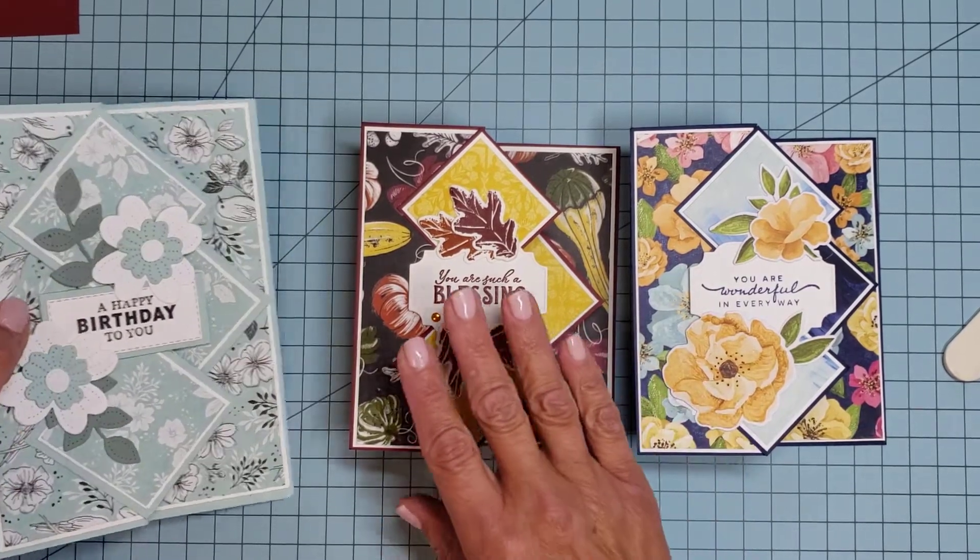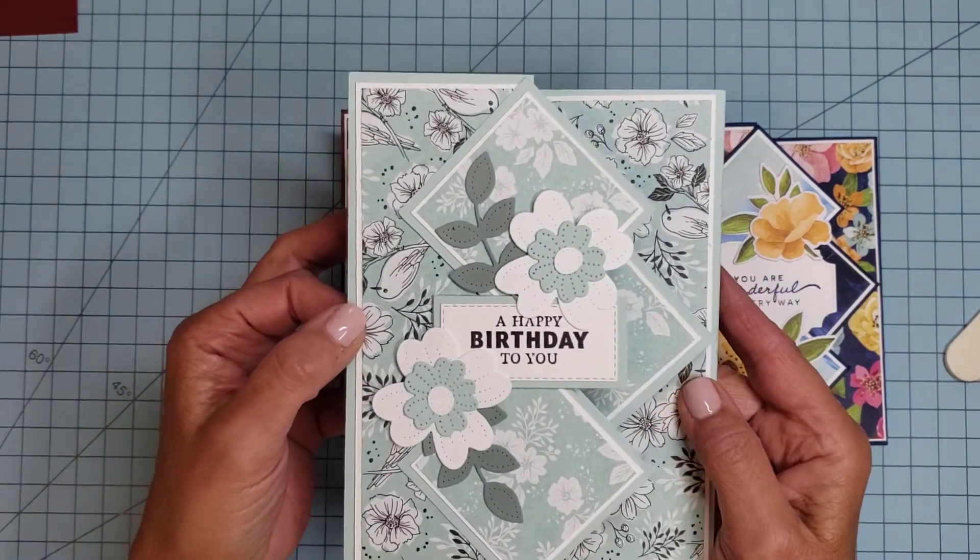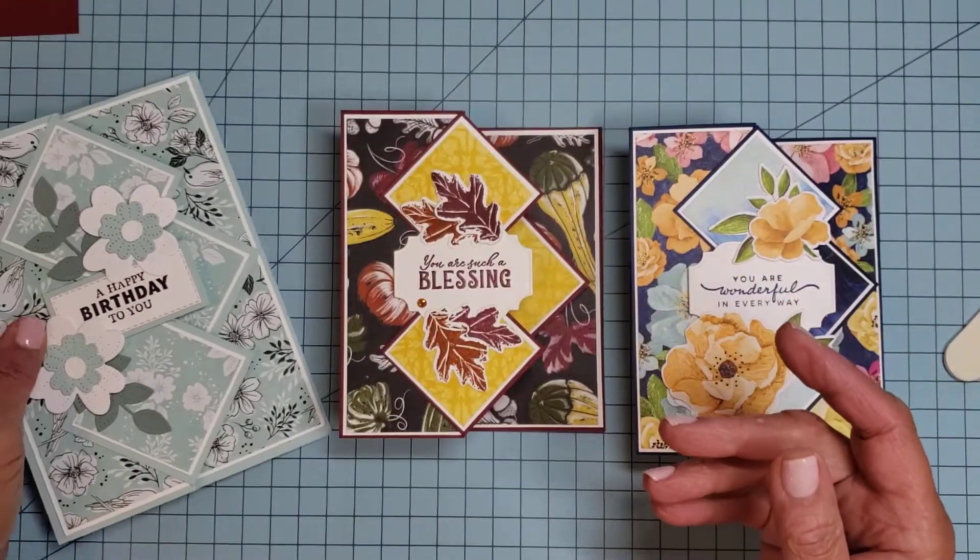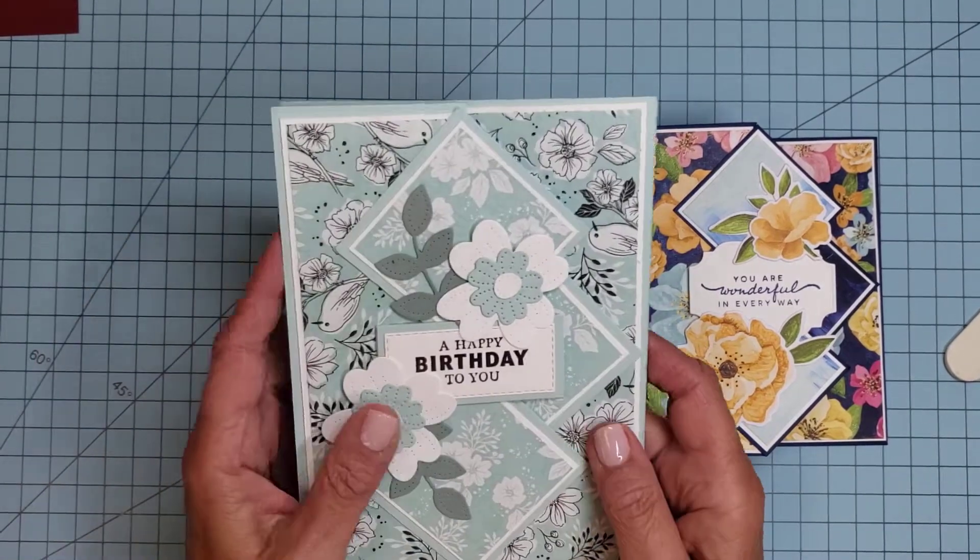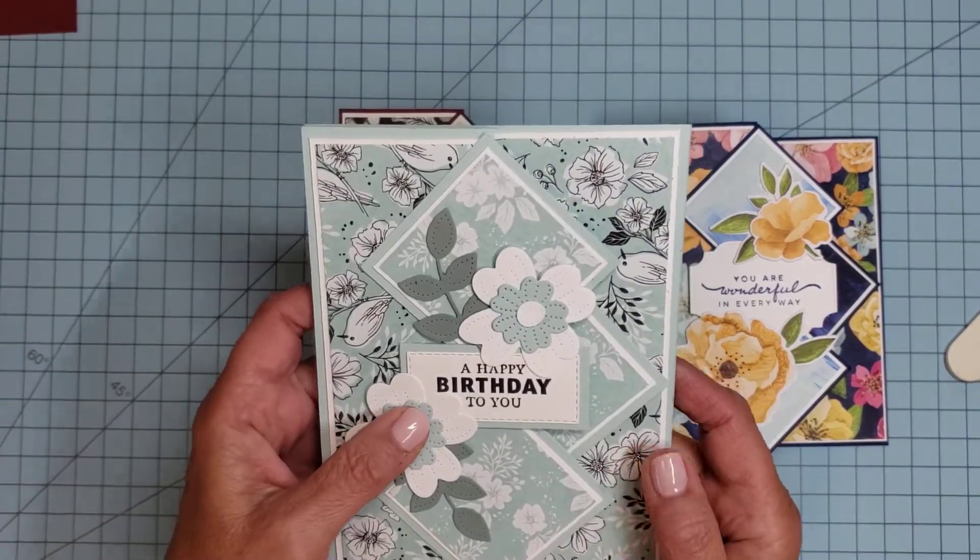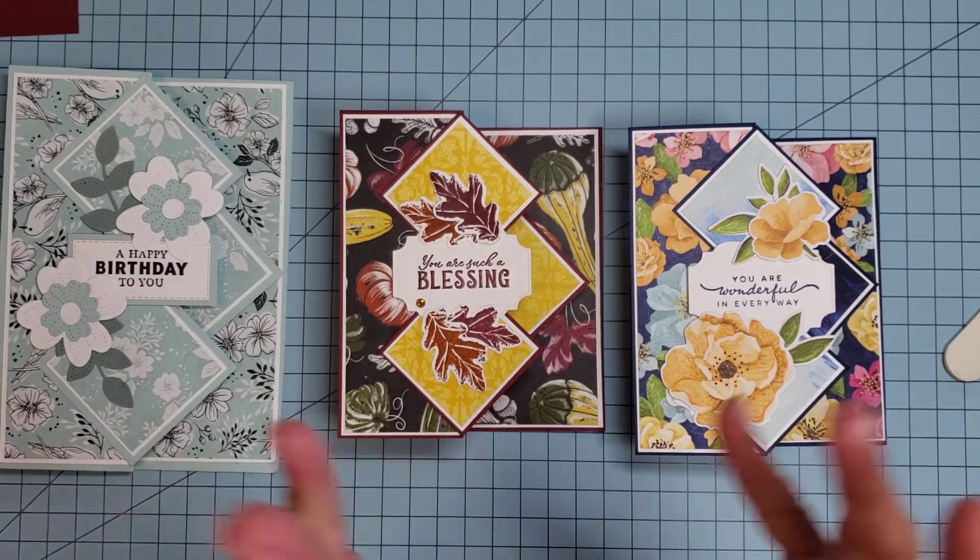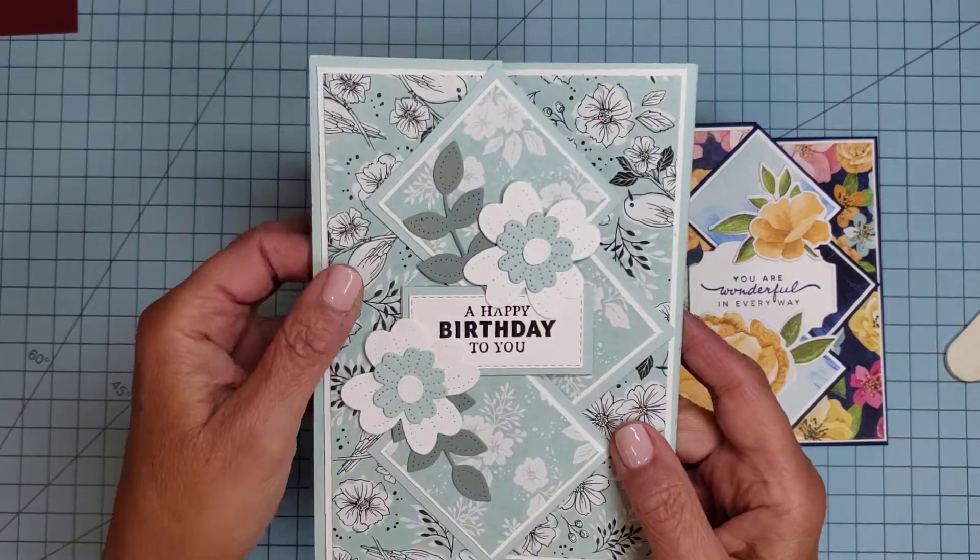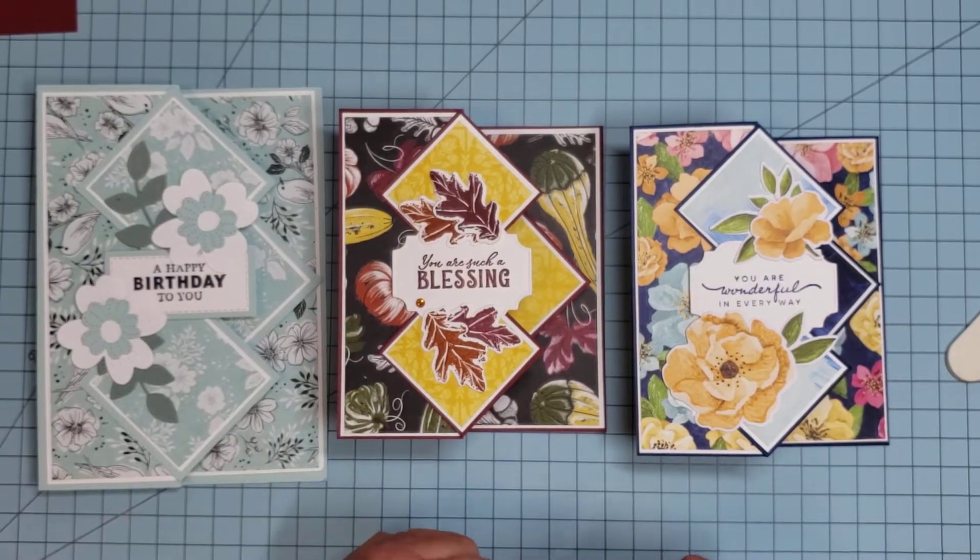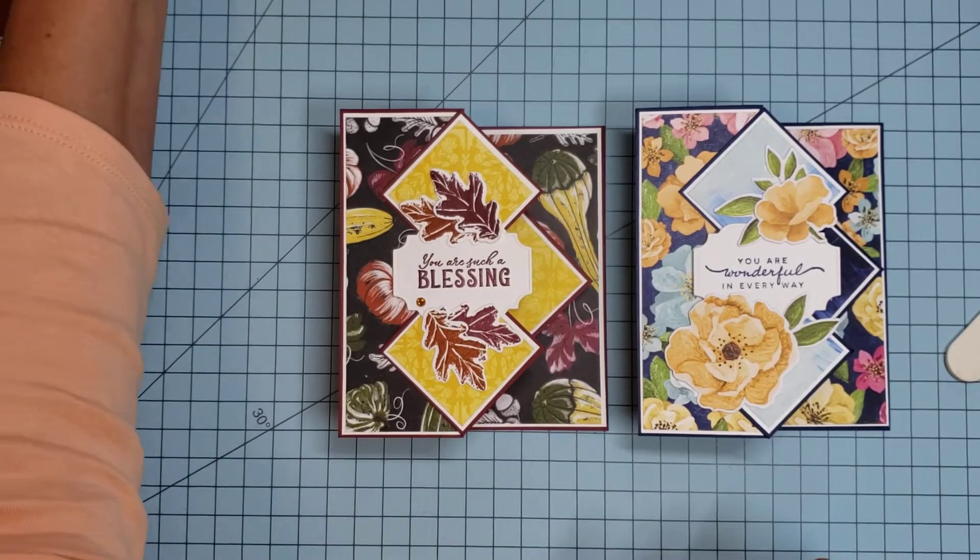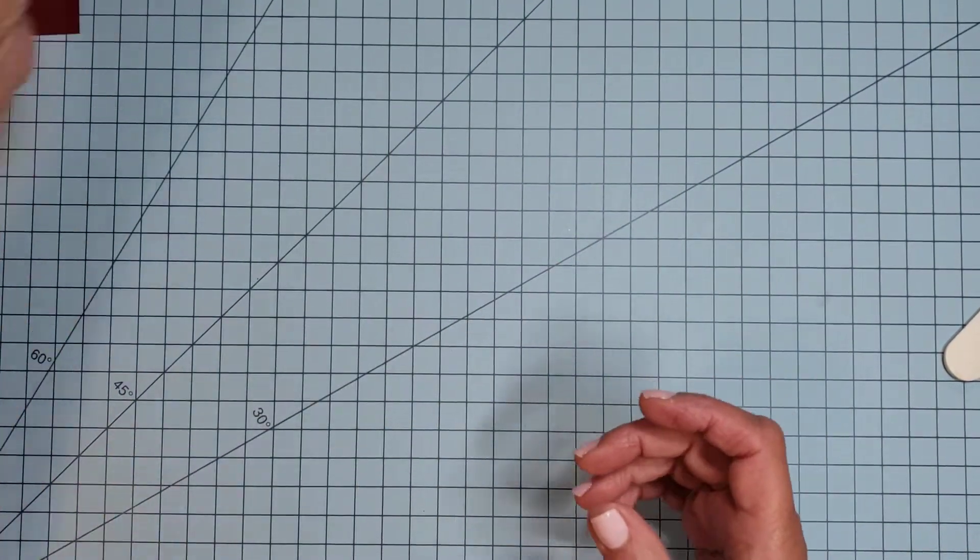I decided to go ahead and create a new template for this pop-up card that was done by Georgia Egan, one of my team members a while back. I put it on my blog and created a tutorial for it, and I got a lot of response and quite a few emails asking if I could scale it down. This original card is a 5x7 size, so they wanted me to scale it down to an A2.